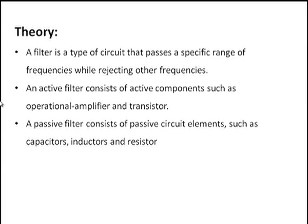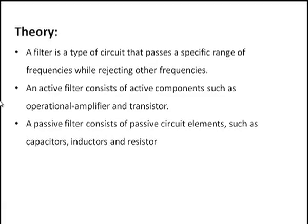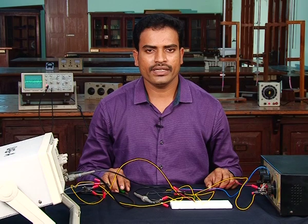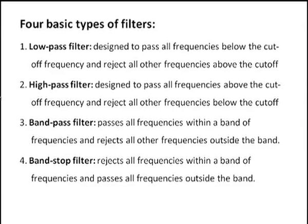A filter is a type of circuit that passes a specified frequency while rejecting all other frequencies. Filters can be generally classified into active filters and passive filters. Active filters use active components like operational amplifiers and transistors. Passive filters use passive element circuits like resistors, capacitors, and inductors. In electronics, there are four basic types of filters available.